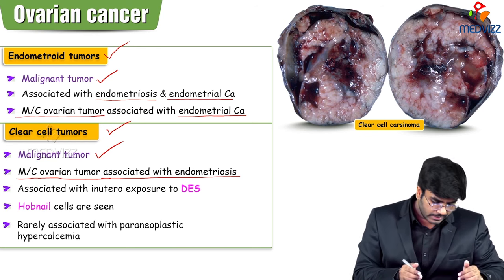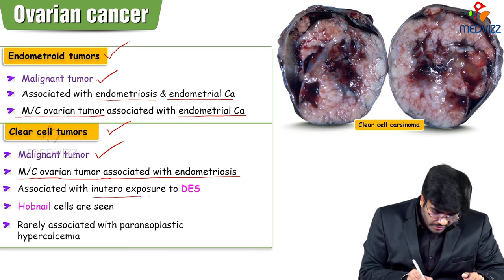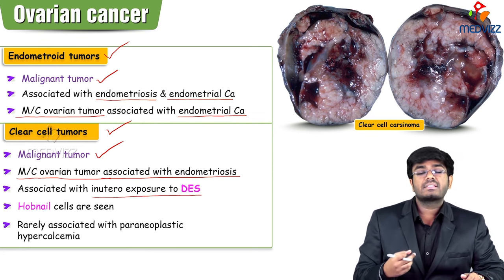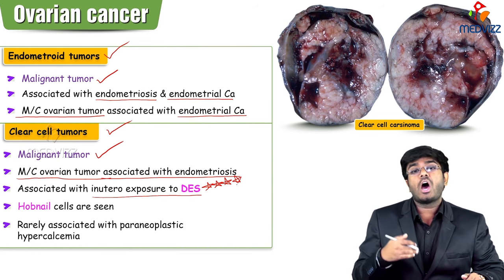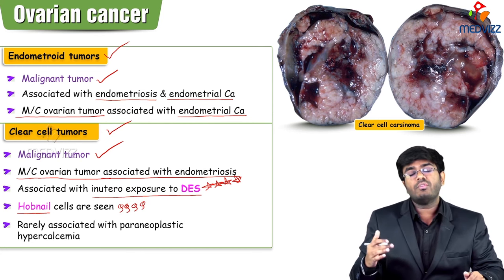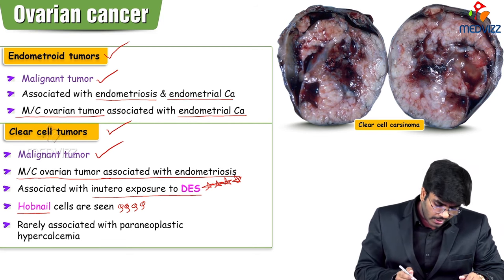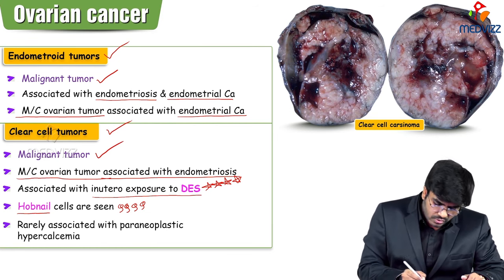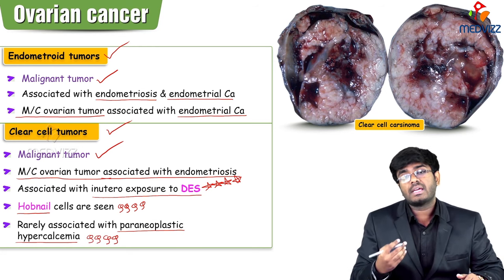Clear cell tumors are associated with in-utero exposure to diethylstilbestrol — taking this drug during pregnancy can cause clear cell tumors in the offspring. On histopathology, clear cell tumors show hobnail cells. Clear cell tumors are also rarely associated with paraneoplastic hypercalcemia.